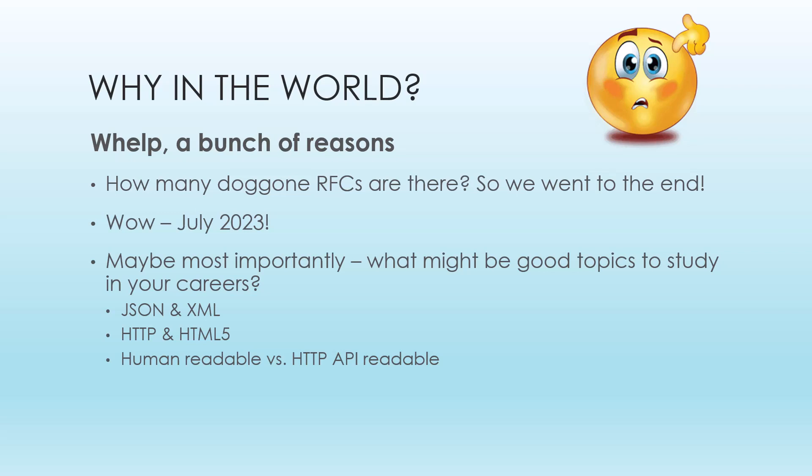Previously, I've been doing RFCs covering the core internet protocols — the ones we always use: IP, TCP, UDP, ICMP. Those all date from the 1980s and are in the range of the 700s or 800s. So why in the world did we make this jump to 9000 and something?